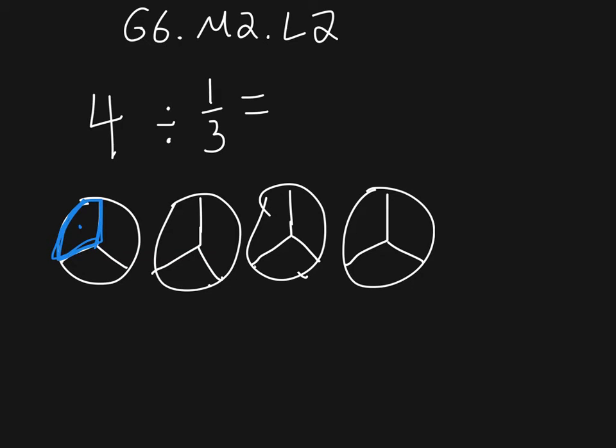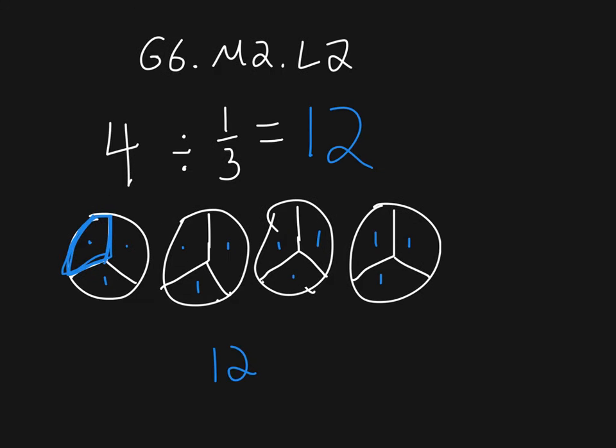And it becomes pretty simple. We just start counting: 1, 2, 3, 4, 5, 6, 7, 8, 9, 10, 11, 12. I see 12 thirds, right? There are 12 of them.